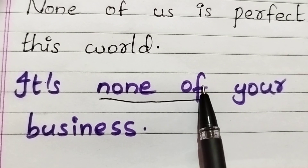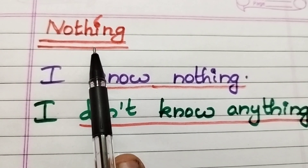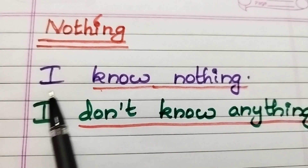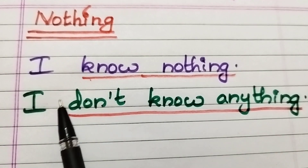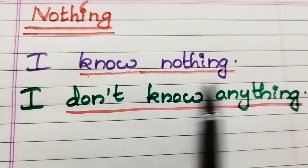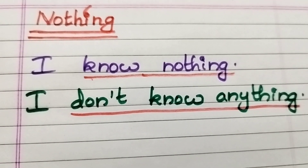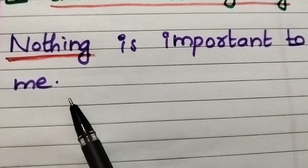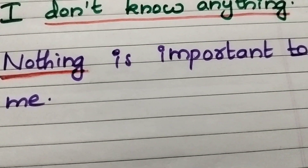'Nothing' is also a negative word. An example: 'I know nothing,' which can also be written as 'I don't know anything' — 'don't' is a negative word, so this is a negative sentence, and 'nothing' changes to 'anything.' Another example: 'Nothing is important to me' — this is also a negative sentence because it has the negative word 'nothing.'